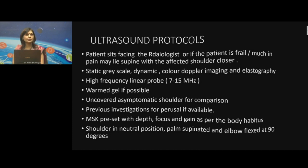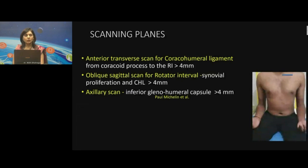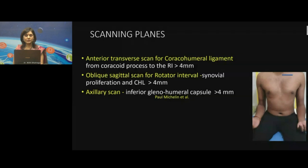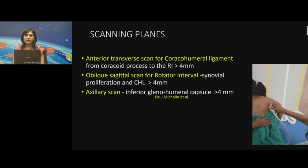The scanning planes are the usual ones for ultrasound of a normal shoulder: the anterior transverse scan for the coracohumeral ligament, oblique sagittal scan for the rotator interval, and the axillary scan for the inferior glenohumeral ligament in the oblique coronal plane. For assessment of the coracohumeral ligament, the medial end of the probe is hinged on the lateral aspect of the coracoid process, aligned transversely along the length of the coracohumeral ligament from the coracoid process all the way up to the rotator interval, with the shoulder in neutral position.